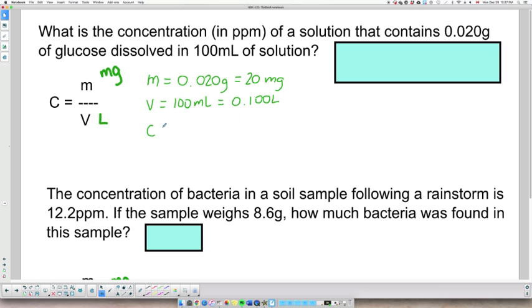And I am looking for the concentration. So if I replace my equation, I will have 20 milligrams over 0.100 liter, and this will give me 200 parts per million.